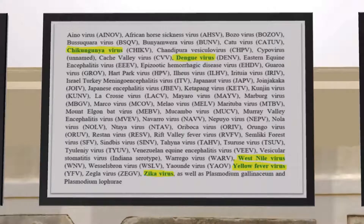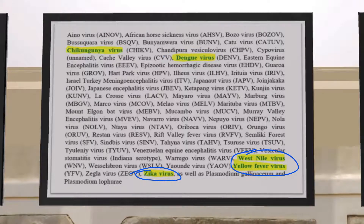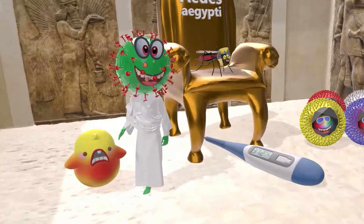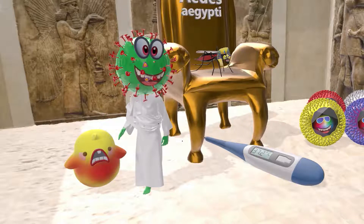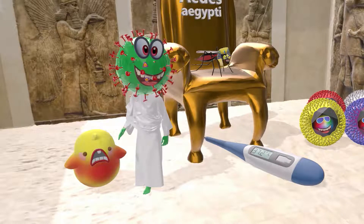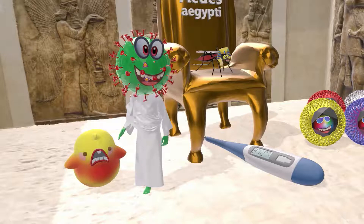Let's talk about these viruses: Chikungunya virus, Dengue virus, Zika virus, West Nile, and yellow fever virus. Over here we see a chicken to remind us of Chikungunya, standing next to a virus in a toga — because Chikungunya virus is a togavirus. The chicken has a rash, and perhaps also arthralgias, as Chikungunya virus can cause rash and arthralgias. This reminds us that the Aedes mosquito can transmit the Chikungunya virus.